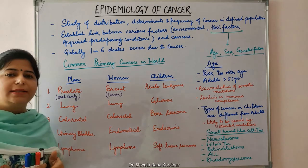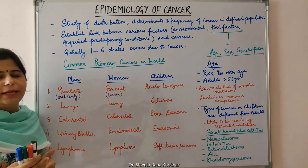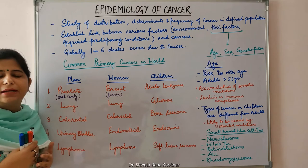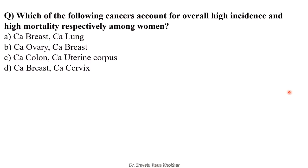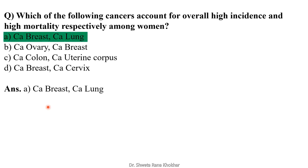High incidence doesn't mean high mortality. A community post question asked: which of the following cancers account for overall high incidence and high mortality respectively among women? Most responses favored option D, but the correct option is A — carcinoma breast for high incidence and carcinoma lung for high mortality.